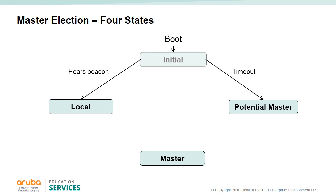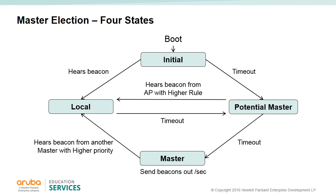An IAP will start in the initial state and listens for a master beacon. The master sends a master beacon every second. If no beacons are received, the IAP times out and moves to the potential master state. The IAP will now send out potential beacons, or it may receive a potential beacon from another IAP. Then the rules of the election process will be applied to determine who should be the master. If the IAP wins the election process it becomes the master. If there is the possibility of two masters, the election process will determine which should be the cluster master.